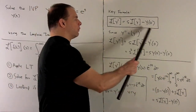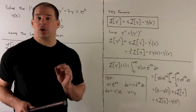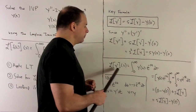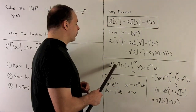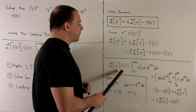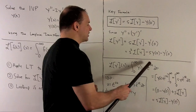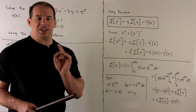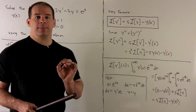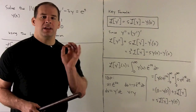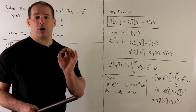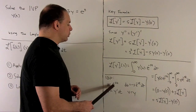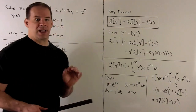The key formula comes from integration by parts applied to the Laplace transform of y prime. We're doing the integral of y prime times e to the minus st dt. Treating s as a constant, we look for something that integrates nicely. We let dv equal y prime dt, so that v equals y, and u equals e to the minus st.